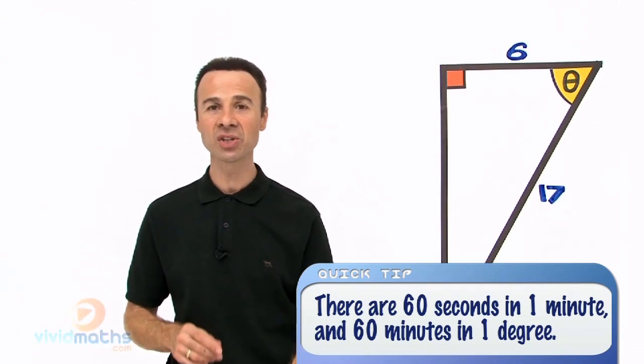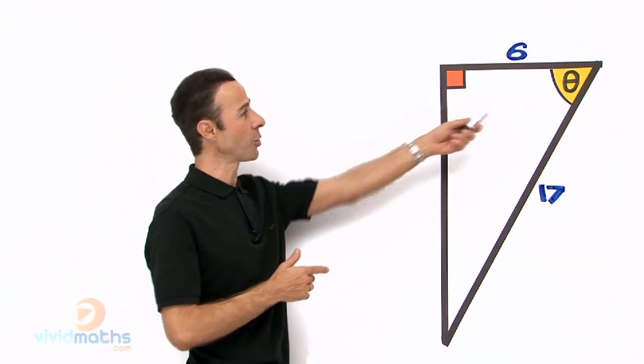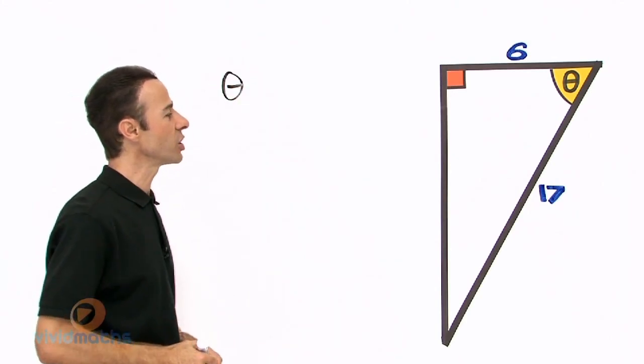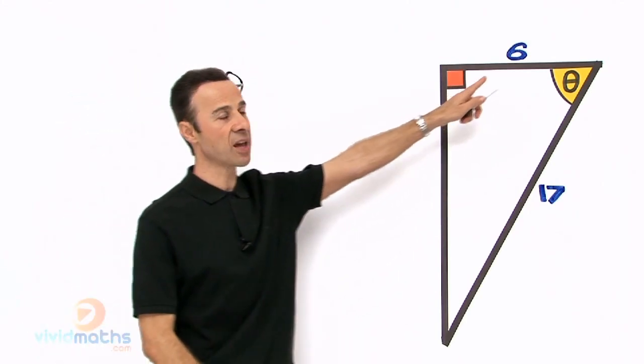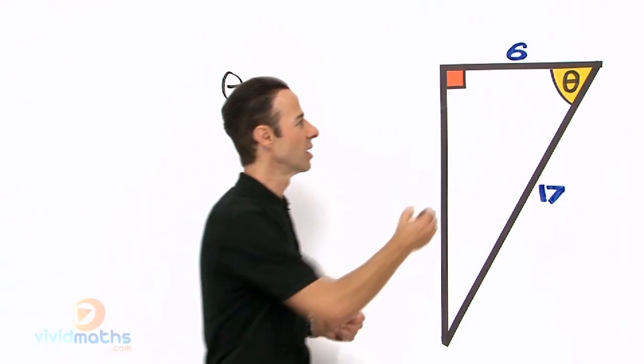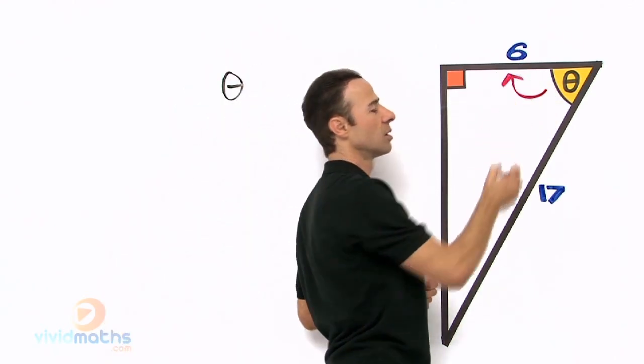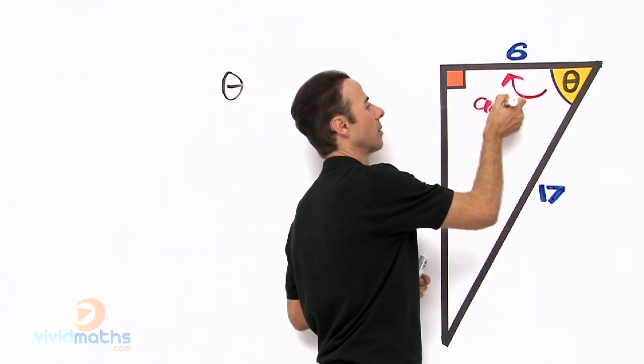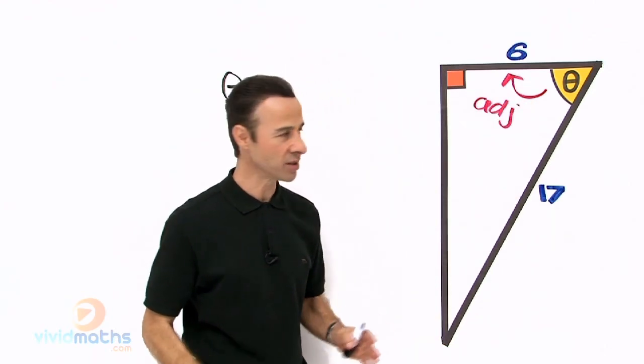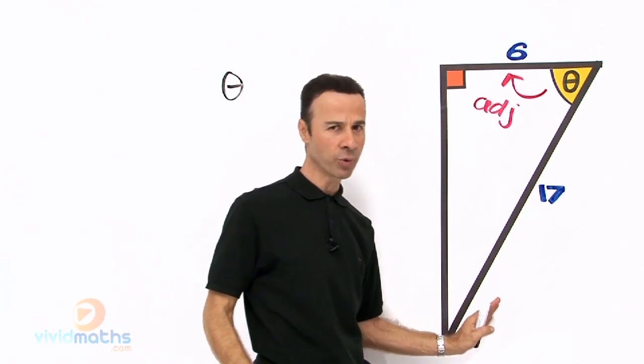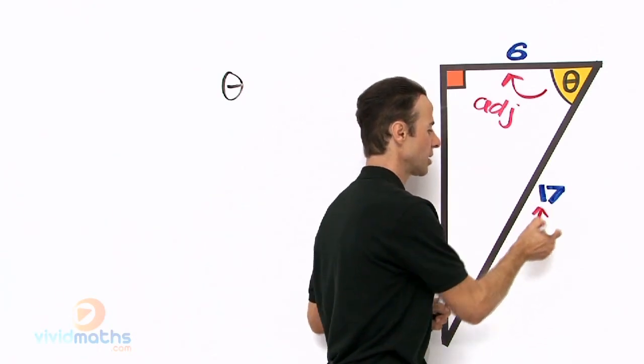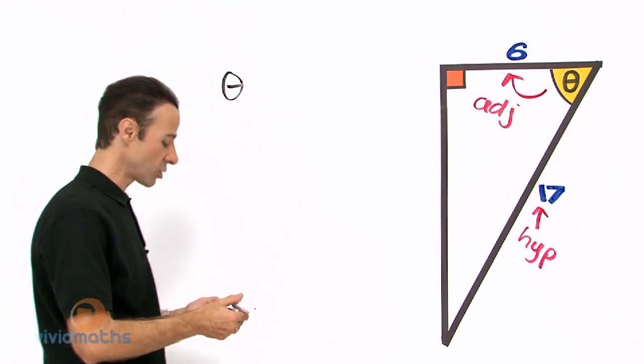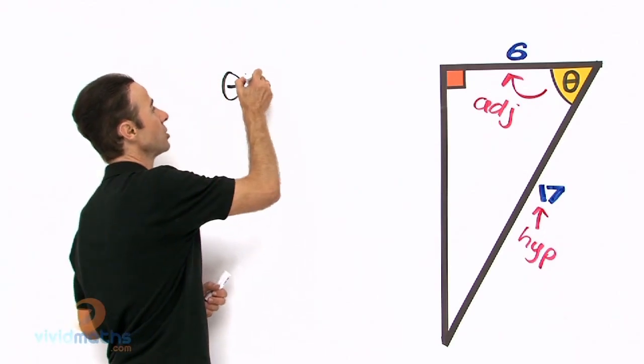First thing is to get the ratio. Let's write it up now. There's the theta we're looking for. Let's have a look at that 6—where is that 6? It's right next to the theta. That starts with an A—it's ADJ, it is adjacent. And right here this long length, you probably already know, is HYP, the hypotenuse. So let's write those ratios out.